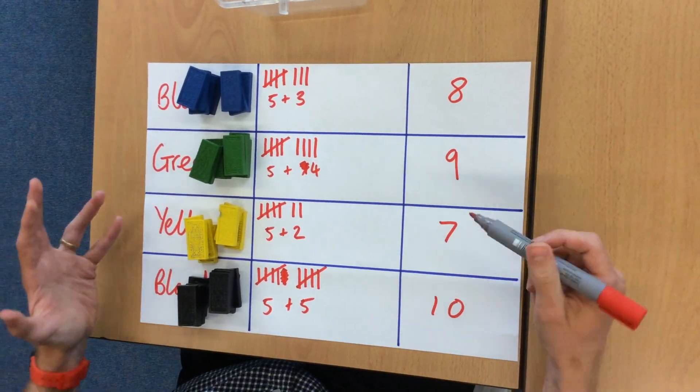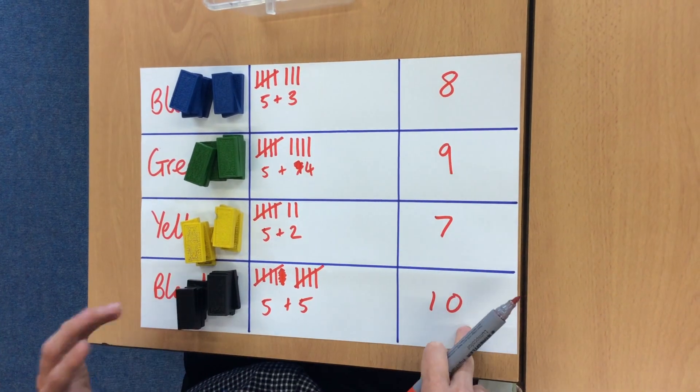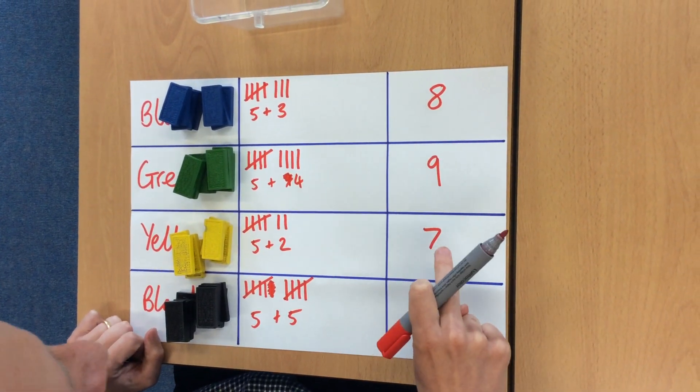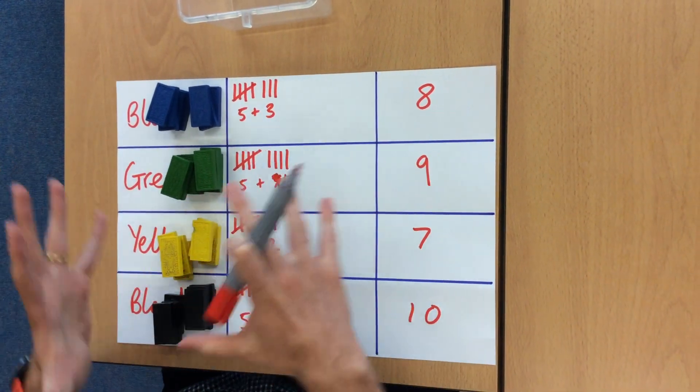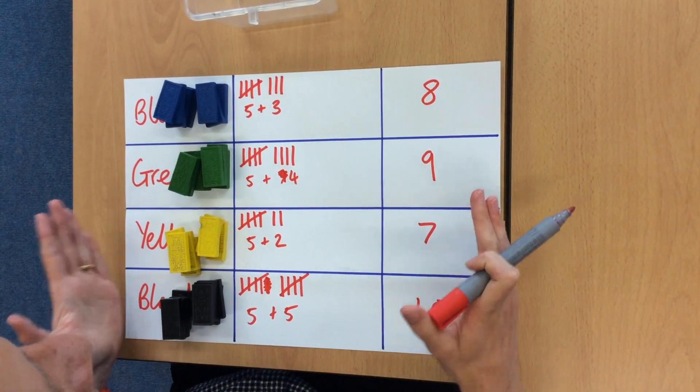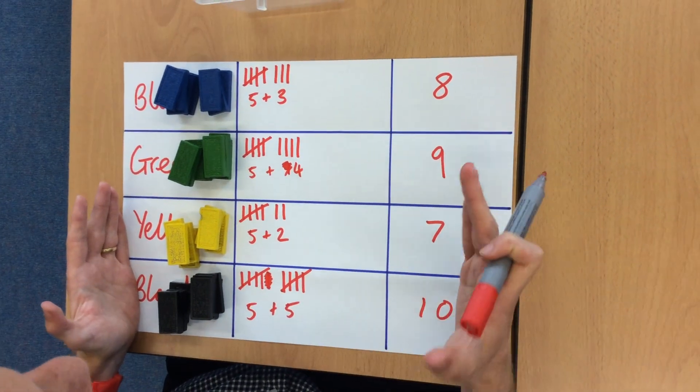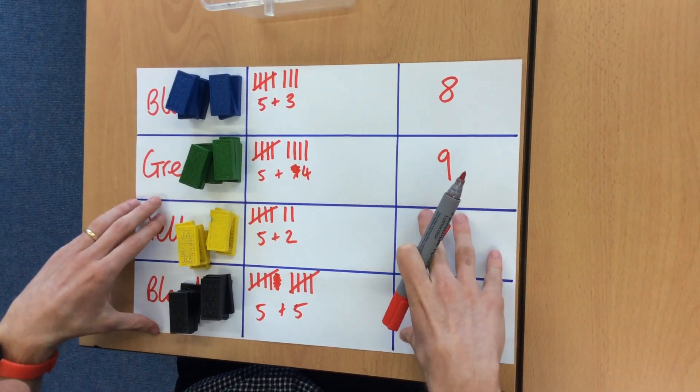So from looking at this data, I can clearly see that ten was the most I had. And the least was yellow with only seven. Now make sure that you double check your calculations here. Because you will need this data for tomorrow's lesson. So it is very important that we get this right first time.